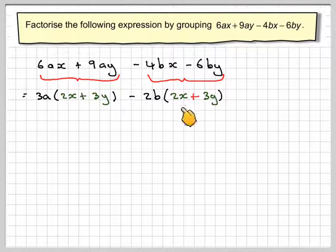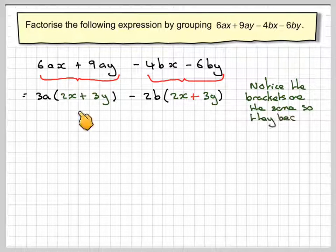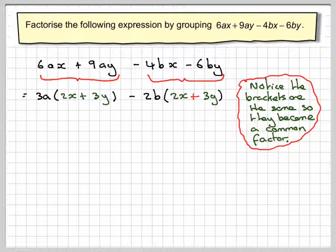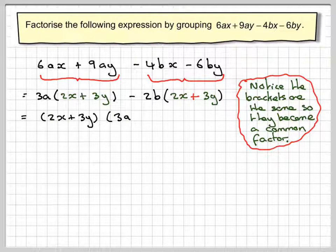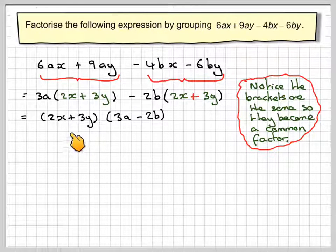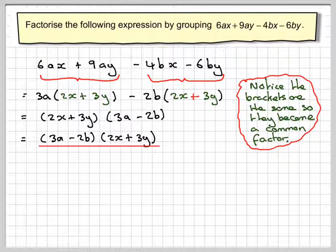Notice here and here we now have the same thing. And so, if you've done this procedure correctly, always with this type of expression, these two brackets would be the same. So, they can now come out as a common factor. We'll take out a common factor of 2x plus 3y. What's left? In brackets, we're going to have 3a minus 2b. You could write them the other way round, but just get the letters right if you prefer.